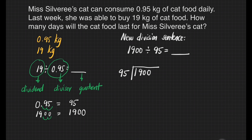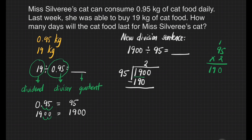How many 95s are there in 190? Let's try to multiply. 95 times 2: 5 times 2 is 10, write 0, carry 1. 9 times 2 is 18, plus 1 is 19. That's 190. So it means there are two 95s in 190. 95 times 2 is equal to 190. Let's subtract. 190 minus 190 is 0.